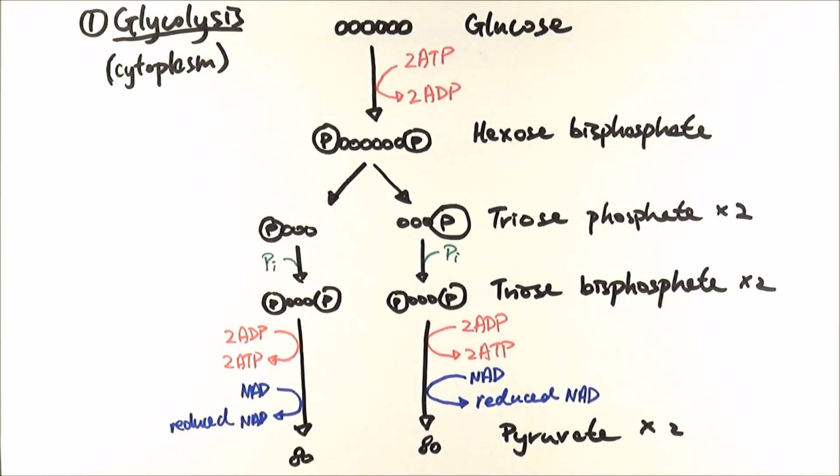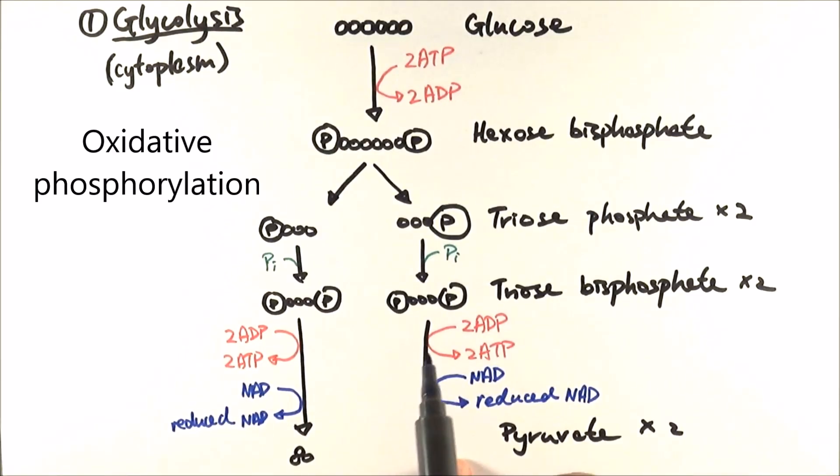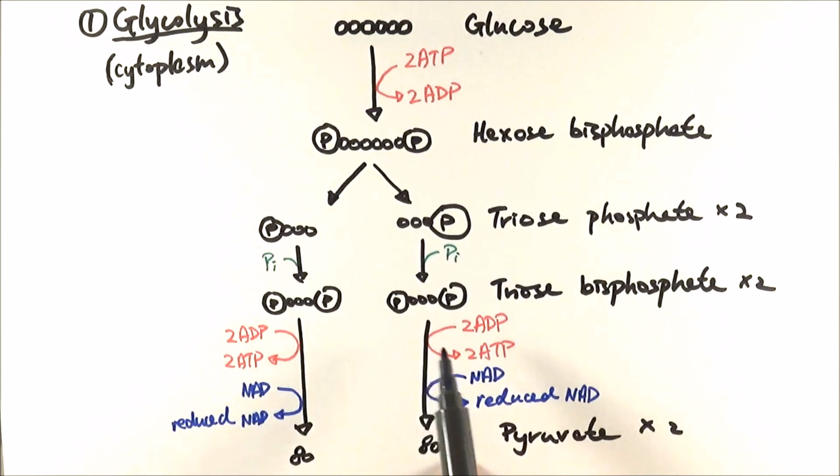We also have something called oxidative phosphorylation, which is the final stage where we use oxygen to make ATP. Whereas here, this particular reaction, we didn't need any oxygen or light to do that.